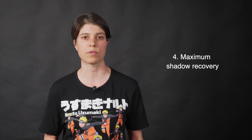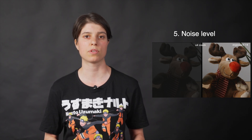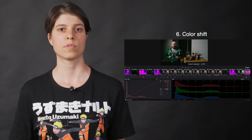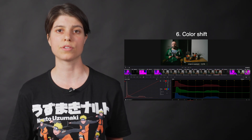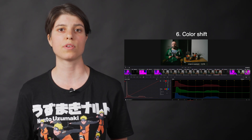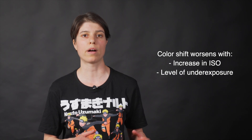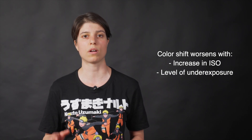4. Maximum shadow recovery. 5. Noise level. Here we'll have both a visual inspection of all the clips as well as calculated noise levels using the Neat Video plugin. 6. Color shift. For now, I've observed a significant color shift for several of the underexposed B-RAW clips. The higher the ISO and the more underexposed the image is, the more pronounced the color shift is.